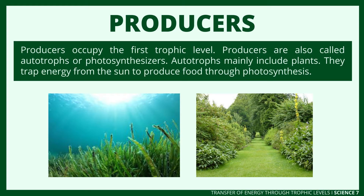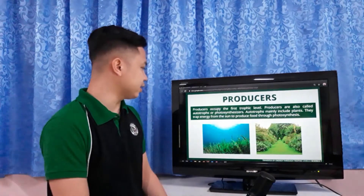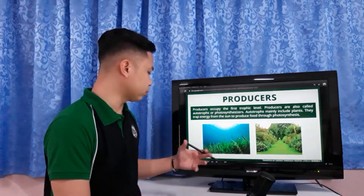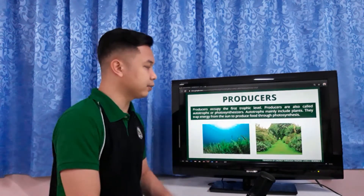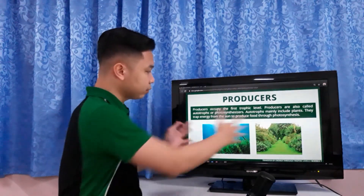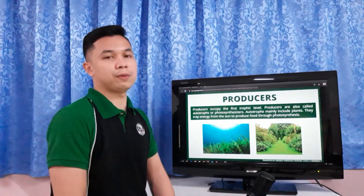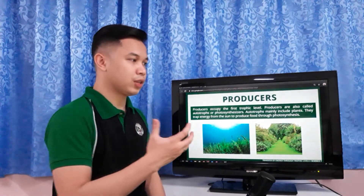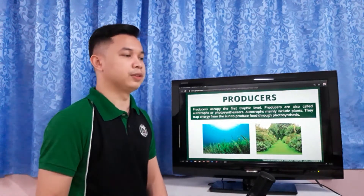Producers occupy the first trophic level. Producers are also called autotrophs or photosynthesizers. Autotrophs mainly include plants — they trap energy from the sun to produce food through photosynthesis. There are autotrophs in water and on land, but both are autotrophs. They can produce their own food.